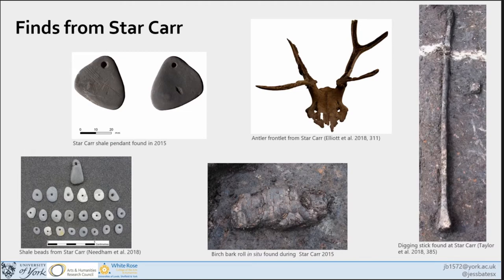So what did we actually find during the excavations — specifically the ones from 2000, not Clark's excavations? Most notably, the organic remains are exceptional, and this is really highlighted through the antler frontlets. We found an additional 12 antler frontlets — humanly modified red deer skulls with antlers, as you can see from the splitting of the antler. We also found the first, or earliest, evidence of mobile art in Britain through a shale pendant — an engraved pendant perforated with flint — along with shale beads, beautiful wooden artefacts including a digging stick, and birch bark rolls used for tar production.